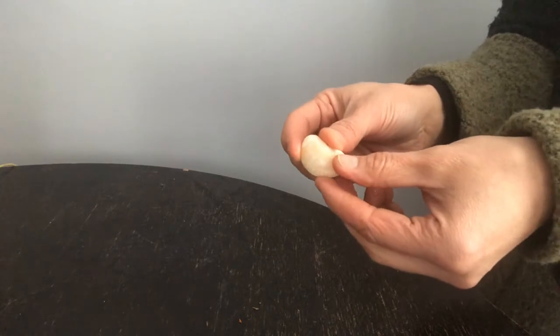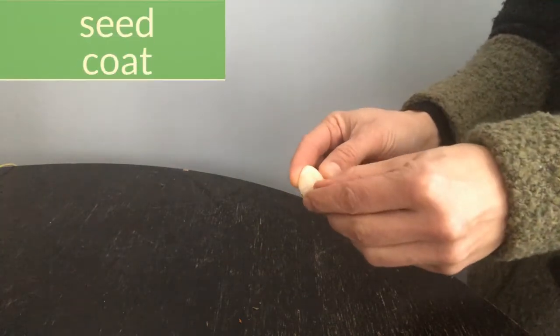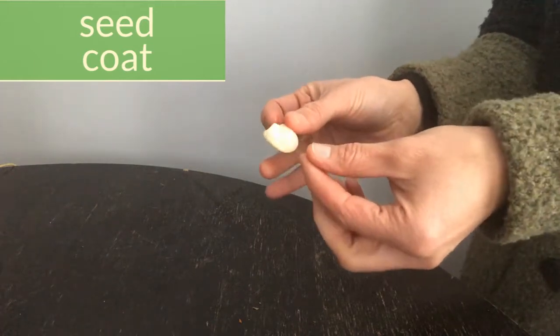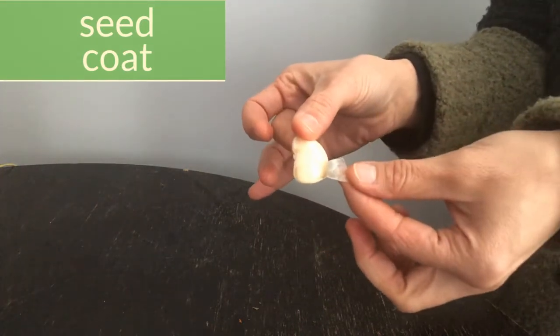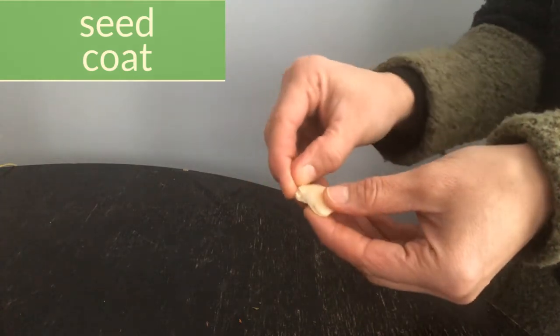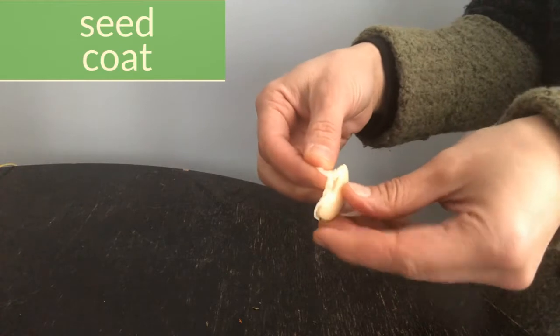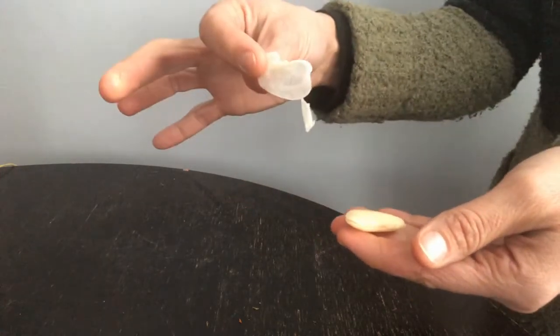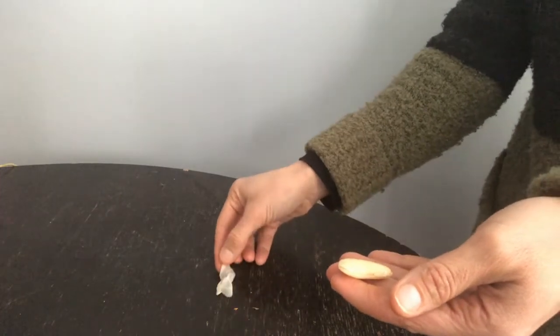The first thing I have to do is take off its seed coat, which is the outer layer, kind of like skin. And I can scratch it with my nail and then peel it off. This is the layer that protects the seed. So, I'm going to take that off, and now I have a naked seed.